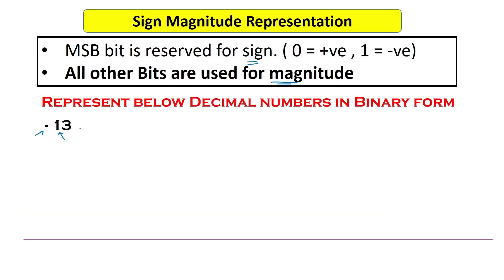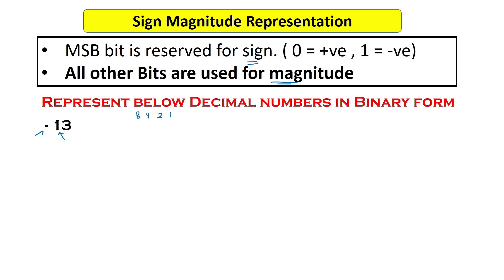This representation says: first, represent 13 in binary. The weights are 1, 2, 4, 8. To convert 13 into binary: 8 plus 4 is 12, plus 1 is 13. So using these weights, 13 in binary is 1101.